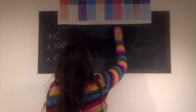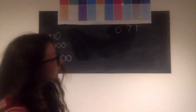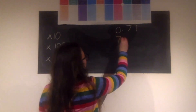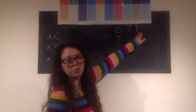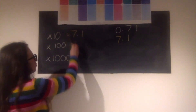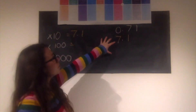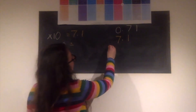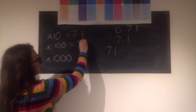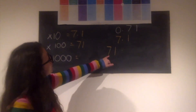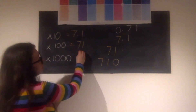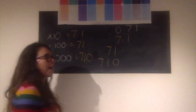0.71: I've got no units, seven tenths, and one hundredth. To times by 10 we move all digits one place to the left: seven tenths turns into seven units, and one hundredth becomes one tenth. So multiplied by 10: 7.1. Multiplied by 100: seven ones becomes seven tens, one tenth becomes one unit, so 0.71 times 100 is 71. Then times by 1000: seven tens turn to seven hundreds, one ten to one hundred, so 0.71 times 1000 is 710. Well done if you got those.